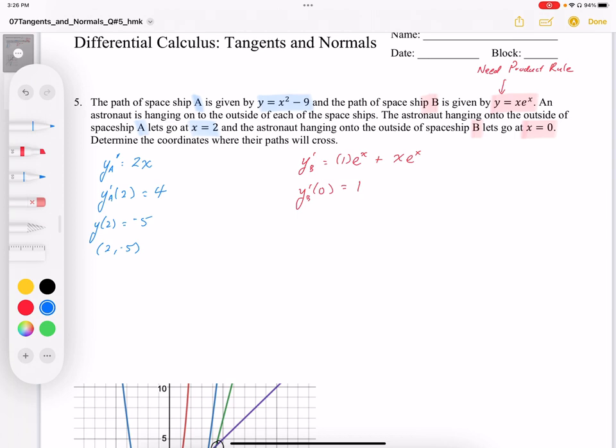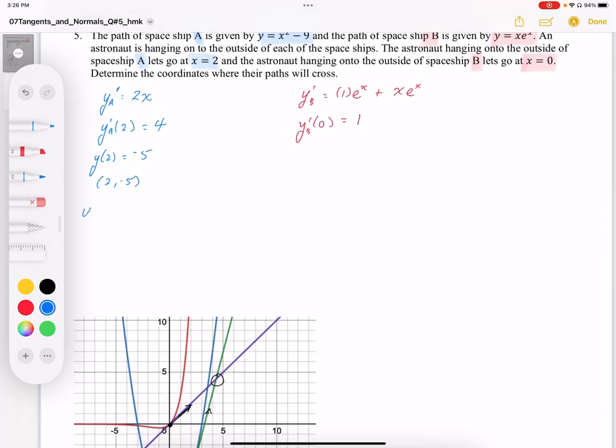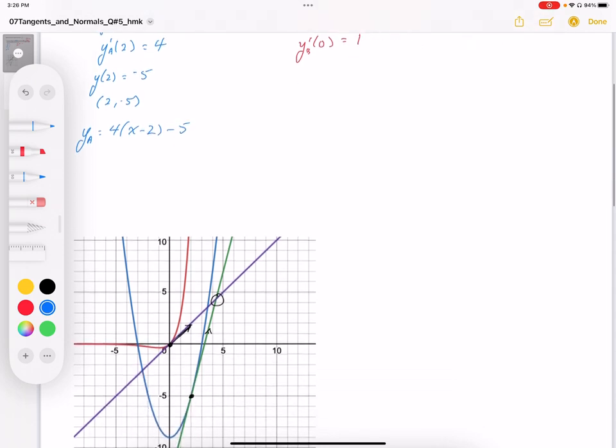So to write the equation of the tangent line, we have the slope, it's going to be 4. And then in point-slope form, it's going to be x minus 2 minus 5. That's the equation of the tangent line. So that's that green line I've shown there. So maybe I'll just highlight that. That green line is going to be the tangent line for that.